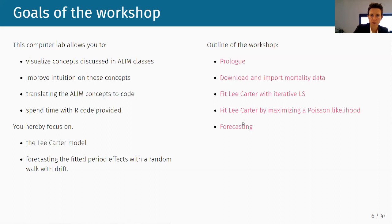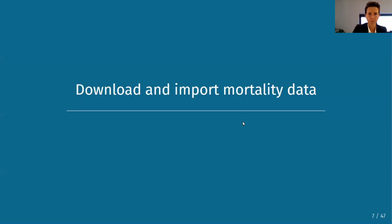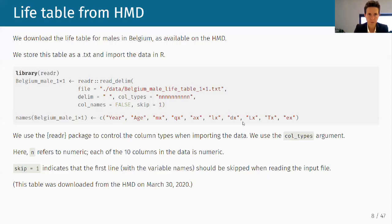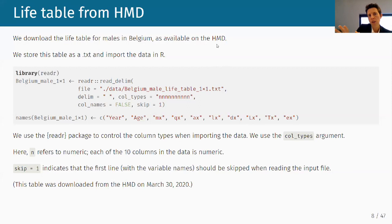Whenever you have a question, do not hesitate to interrupt. In the first part of the demonstration, I pre-downloaded the life table for males in Belgium as currently available on the Human Mortality Database. If you go to the HMD, look for Belgium, and click the life table in a one-by-one format — meaning one age and one year per record — you will get the life table we're going to work with.